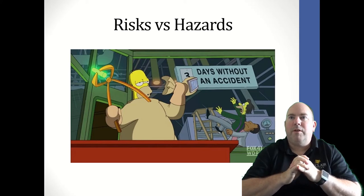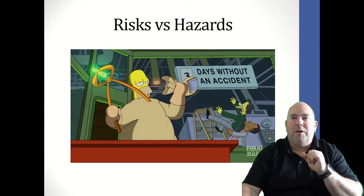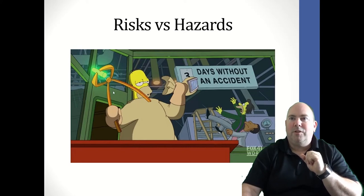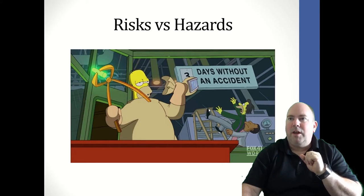Let's look at this picture. Try to think of how many different hazards and risks you can see. We've got Homer here handling plutonium without any protection — plutonium is a hazard, and the risk is probably radiation poisoning. We also have Lenny and Carl working on a ladder — fall from a height is the hazard, and a broken bone from a fall could be the risk.